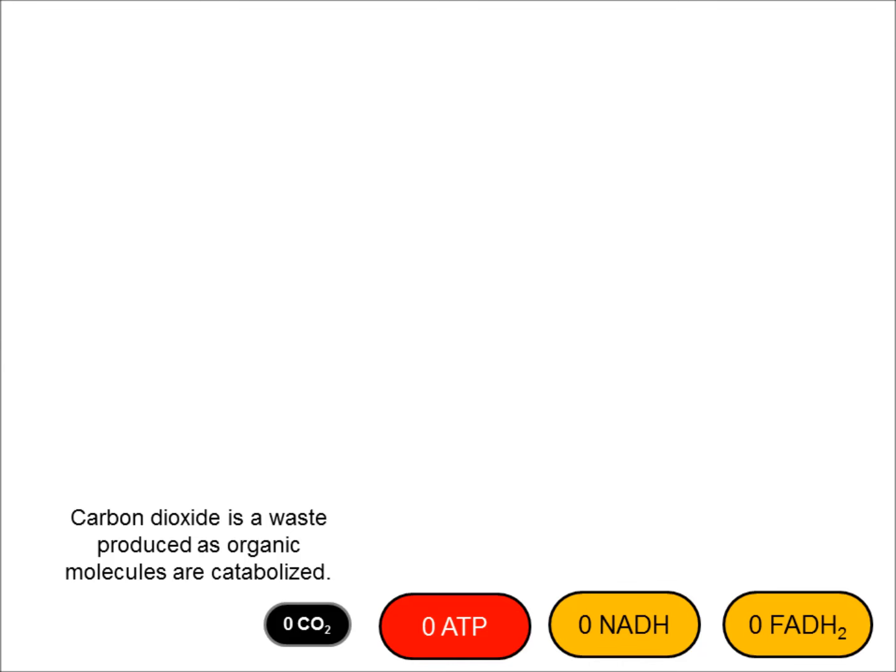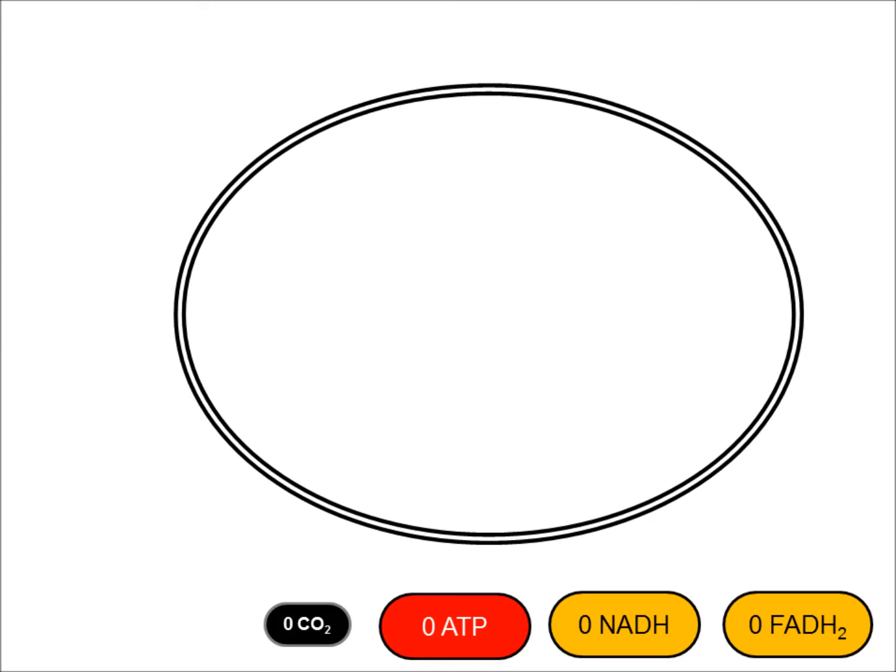As you'll recall, these organic macromolecules are by definition composed of carbon, and so as we tear them apart, carbon dioxide will be produced in some steps as waste. Here's our cell — there's the interstitial fluid and the cytosol just to orient you. Most cellular metabolism begins with carbohydrate catabolism, specifically working with glucose.